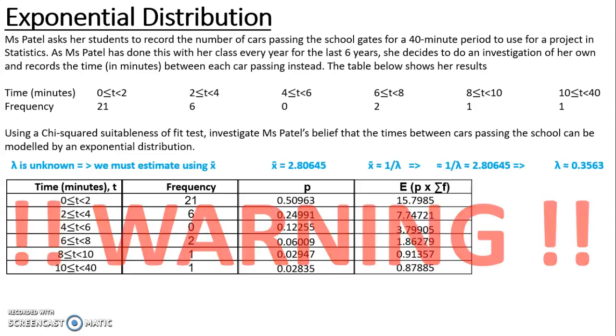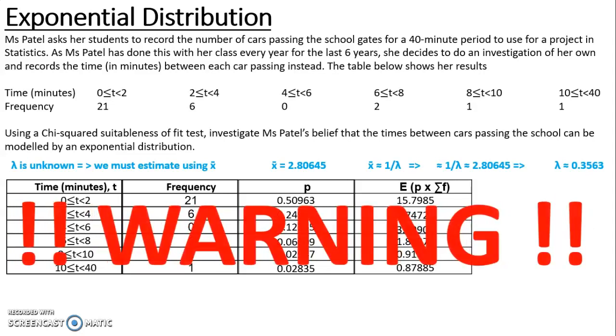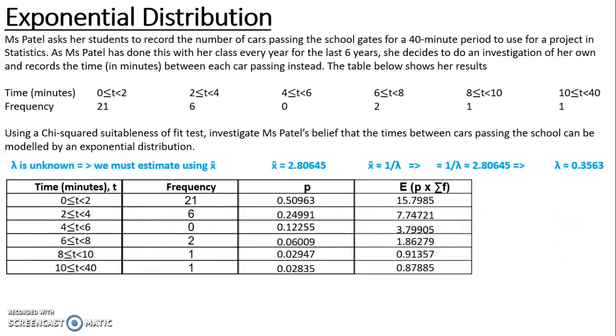In your head there should be a little warning sign going off, because looking at those e values I have 4 of them that are less than 5. We cannot use the chi-squared goodness of fit test if I have expected values less than 5. So to redeem this, I need to combine categories.